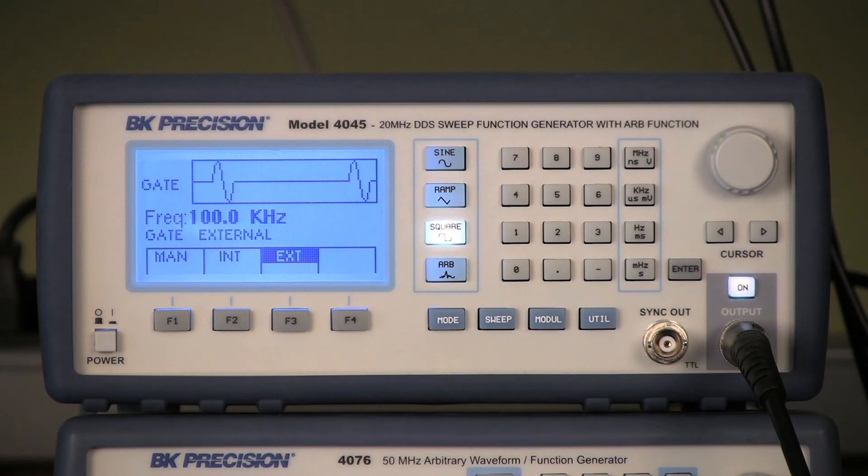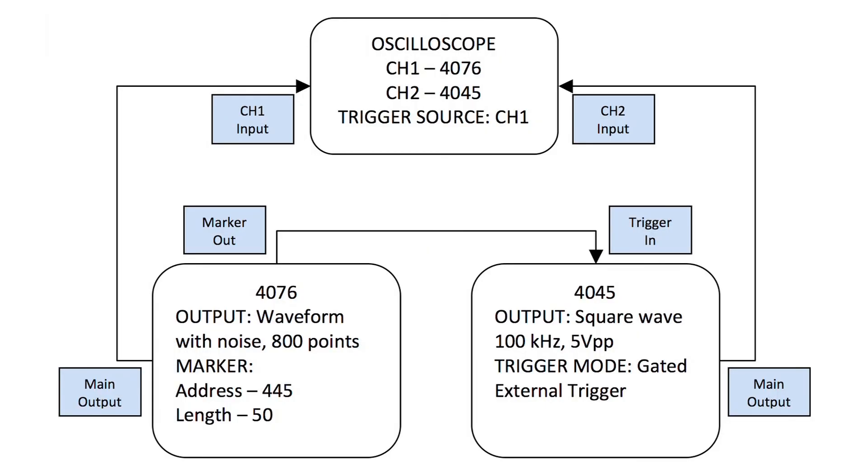The complete setup should look like the following block diagram. With both the 4076 and 4045 main output turned on, I will connect 4076 to channel 1 and 4045 to channel 2 of the oscilloscope. The results should look like the following.